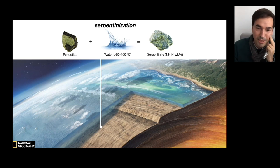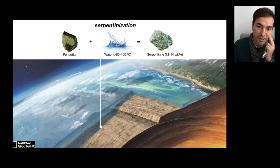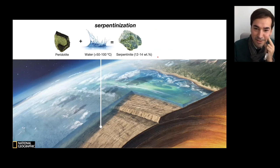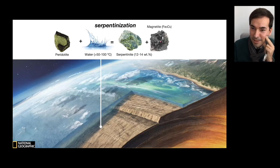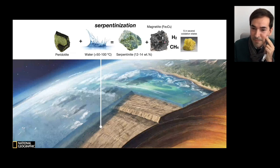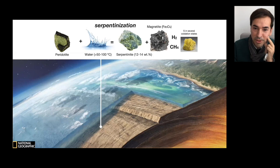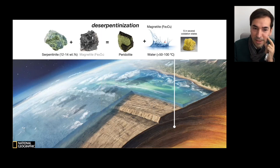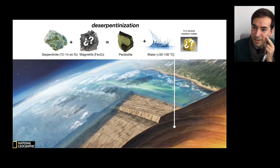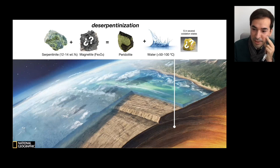Serpentinization is a process that hydrates peridotite and produces serpentinites. But in detail, it's not just serpentinite — it does contain magnetite in variable proportions. It produces some gases at reducing conditions and sulfur in variable oxidation states. So now if we ask what will happen during deserpentinization — if we reverse the reaction — we need to ask ourselves what will be the fate of this magnetite and what will be the fate of these sulfur-bearing species, because they will have an important and strong impact on the released fluids and their oxidation capacity.